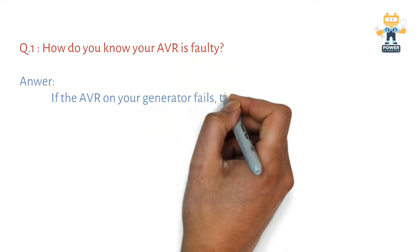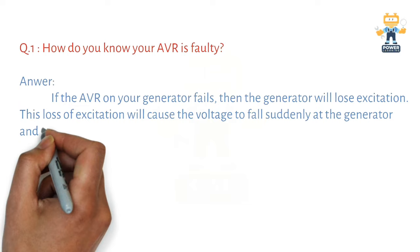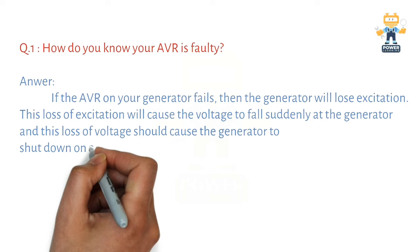How do you know your AVR is faulty? The answer is: if the AVR on your generator fails, the generator will lose excitation. This loss of excitation will cause the voltage to fall suddenly at the generator.